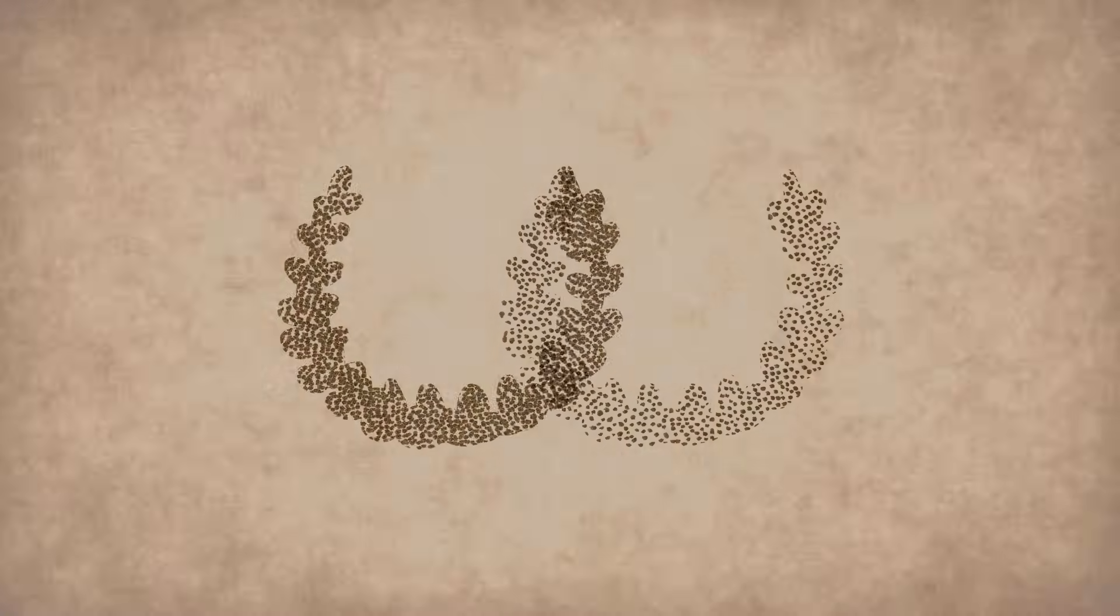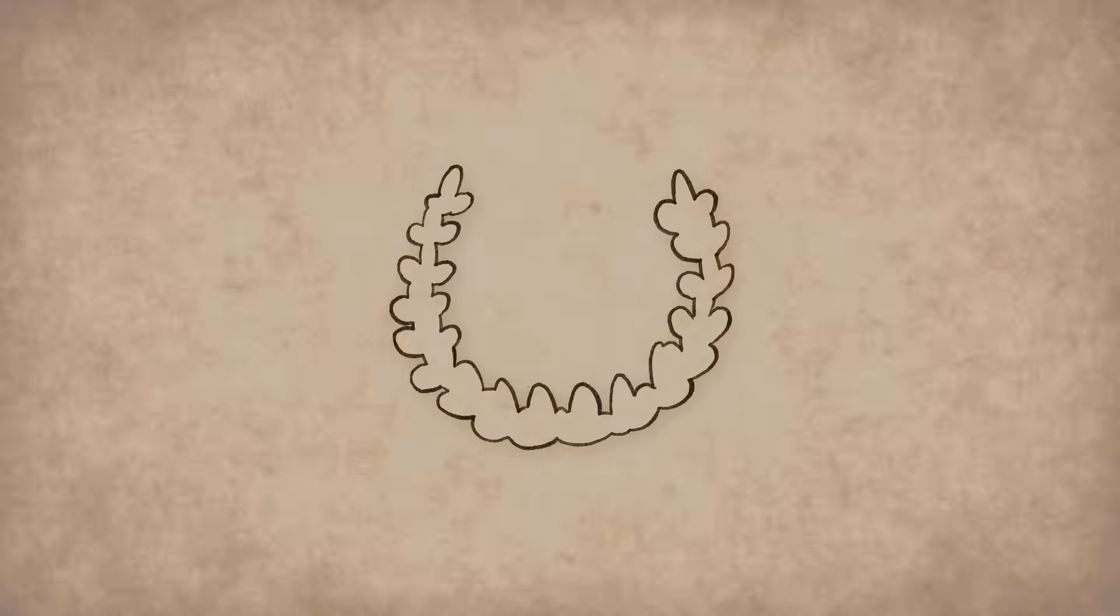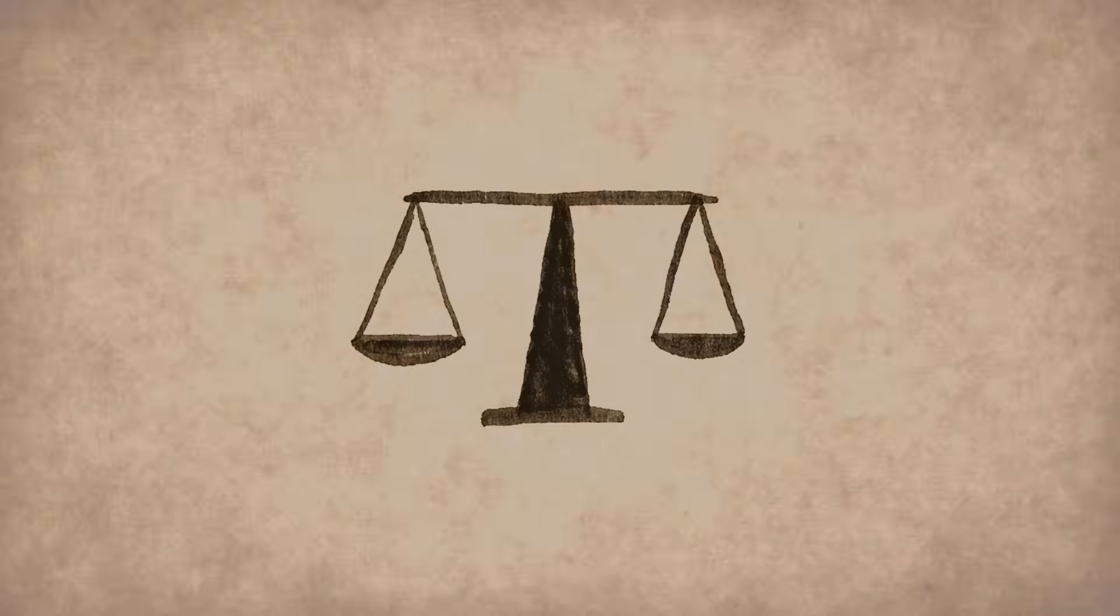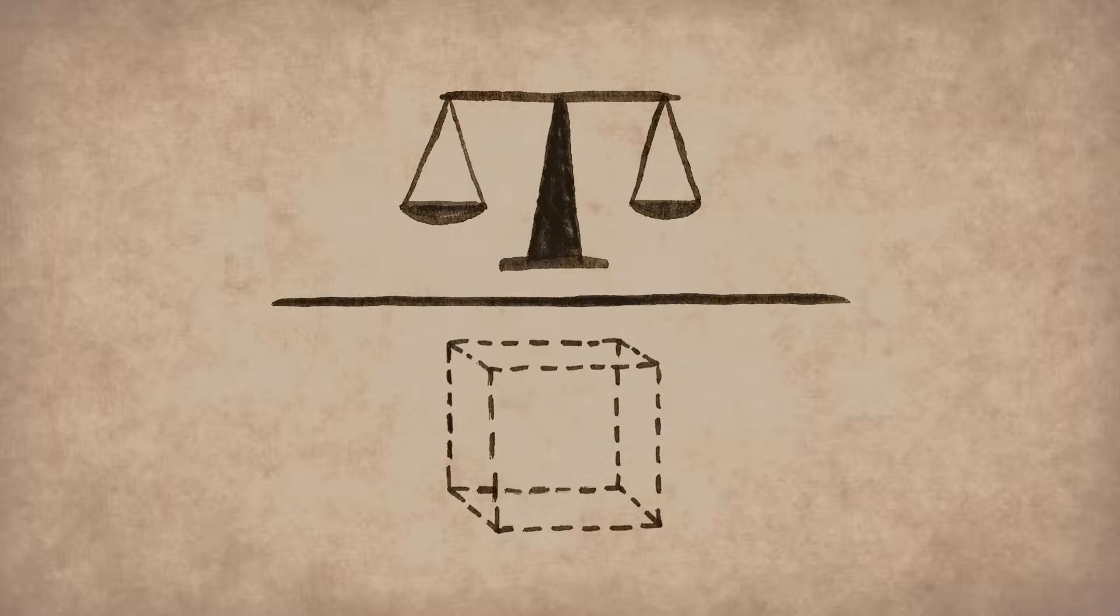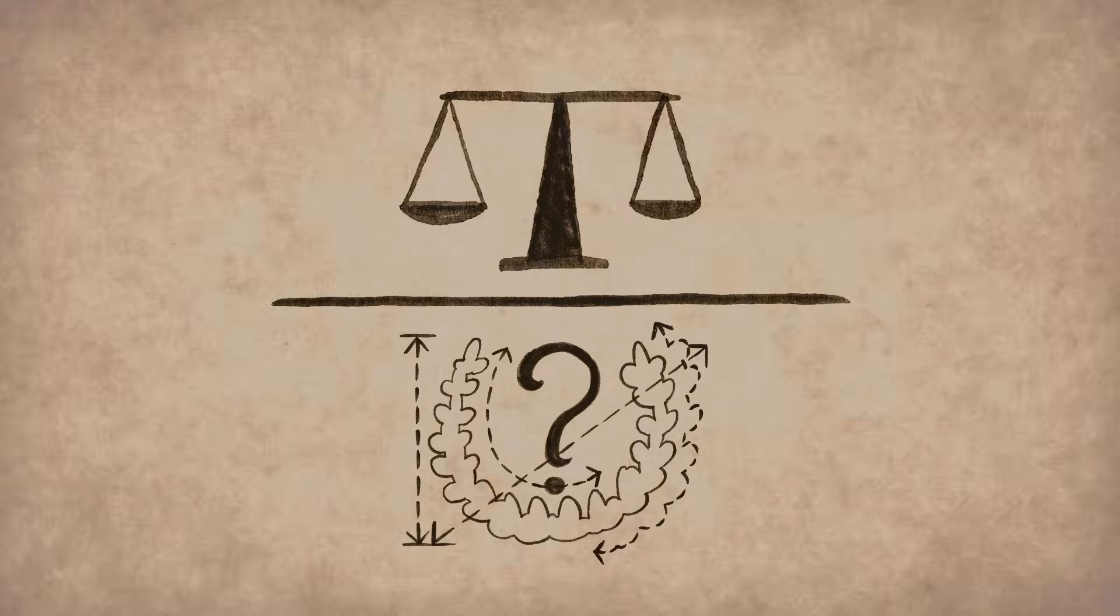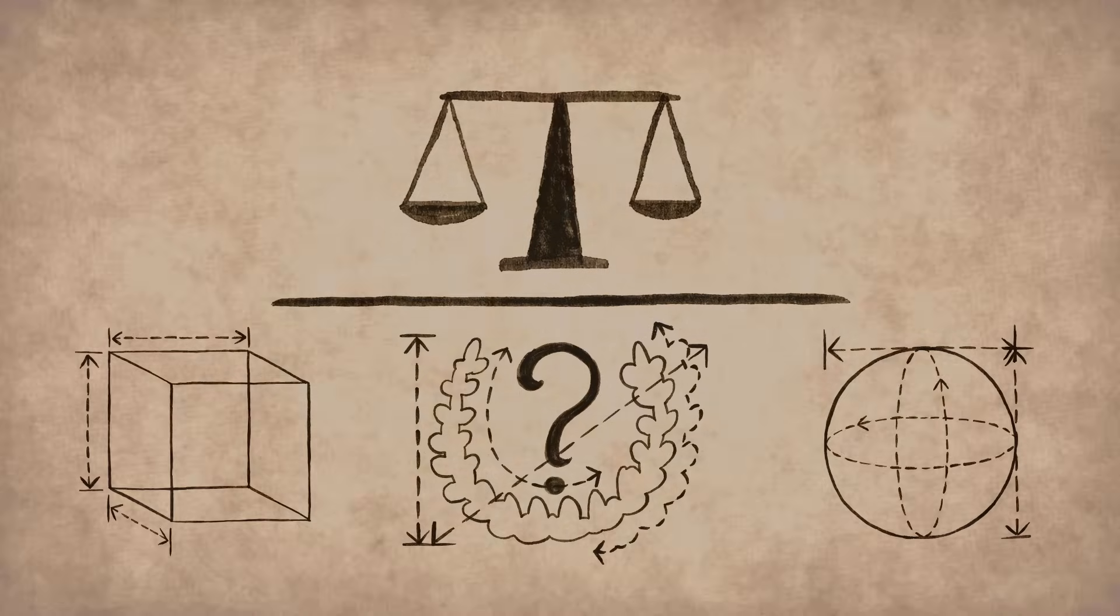But no matter what it was made of, the crown would be the same shape, which means the same volume. So if Archimedes could measure the mass of the crown first and then measure its volume, he could find out how dense it was. But it is not easy to measure a crown's volume. It has an irregular shape that's different from a simple box or ball. You can't measure its sides and multiply like you might for other shapes.